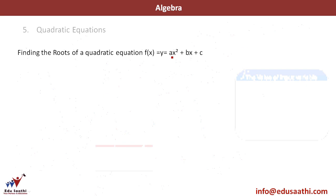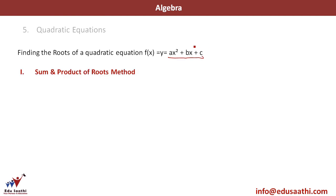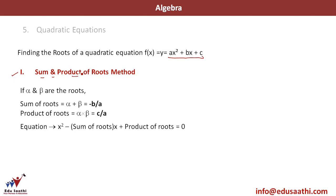I hope you have memorized the general form of an equation: ax² + bx + c. There are various methods to find the roots. The first method is sum and product of the roots. If alpha and beta are the roots, the sum of the roots is given by -b/a, where 'b' is the coefficient of the single power of x term and 'a' is the coefficient of the squared term. The product of the roots, alpha times beta, is given by c/a. From these two relationships you can find the value of alpha and beta very easily.